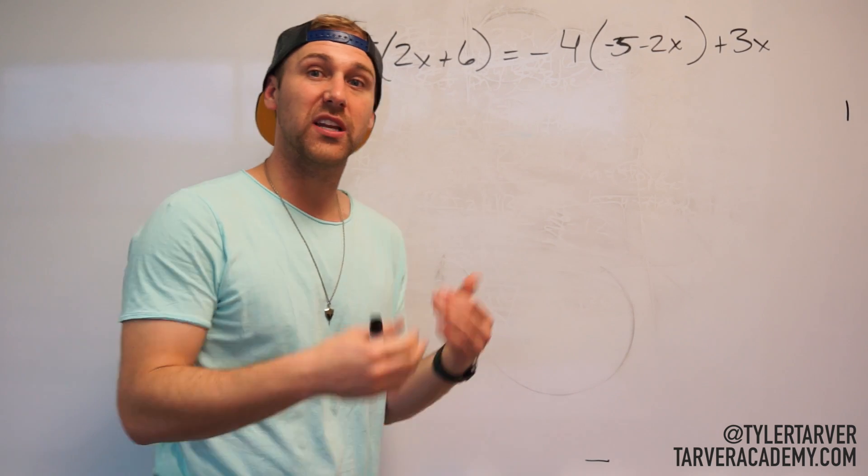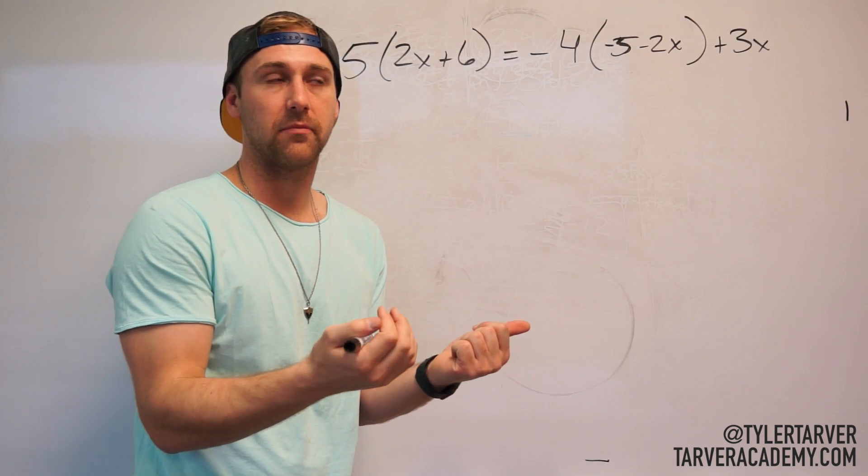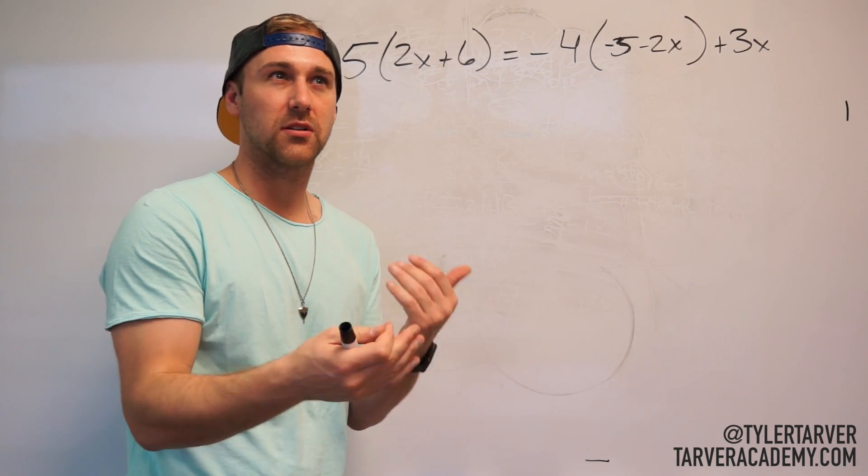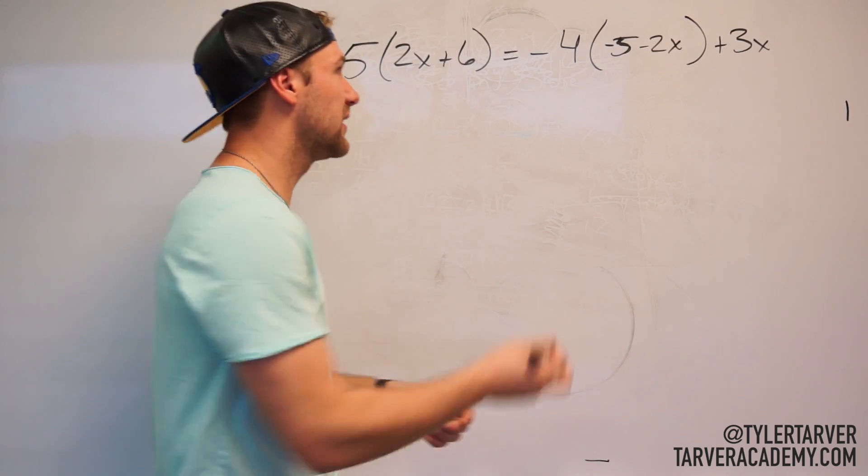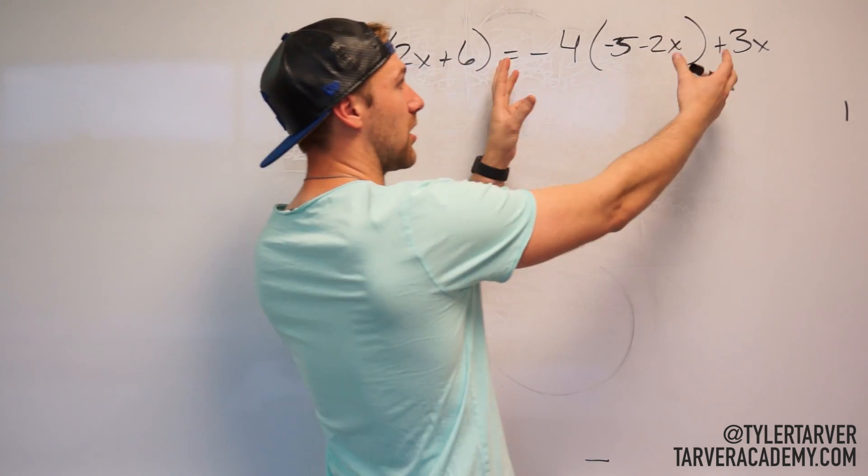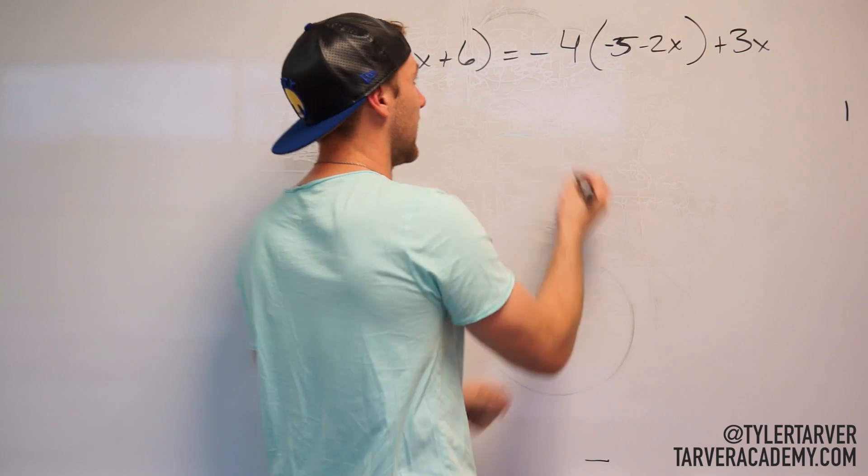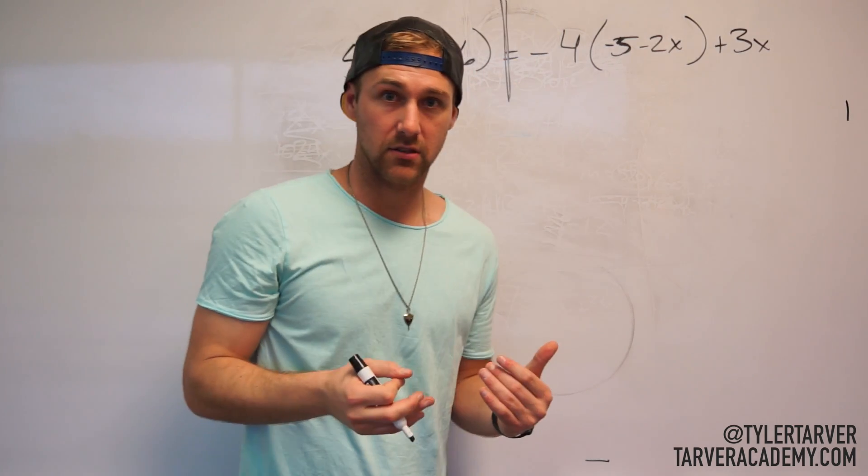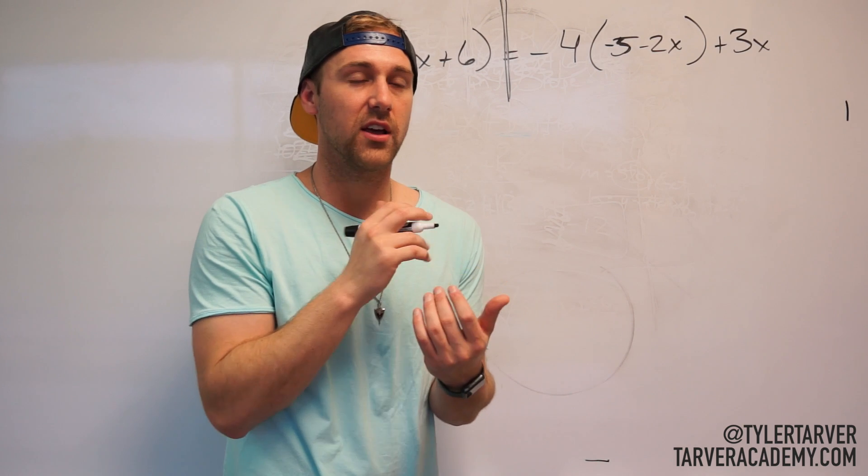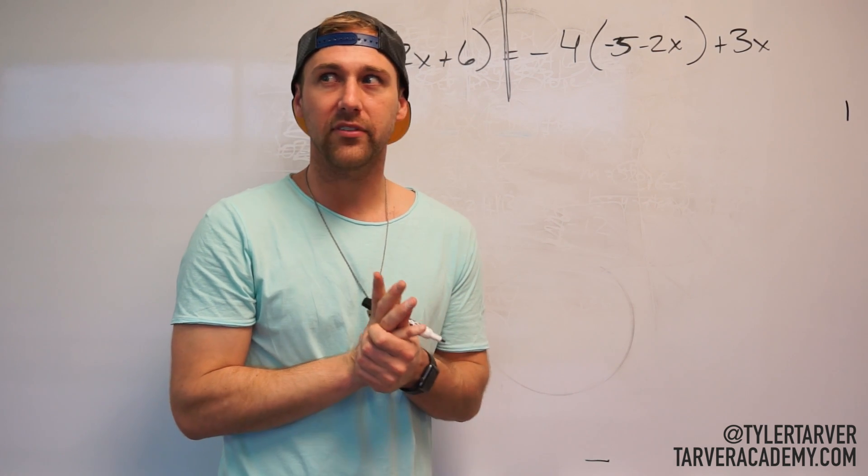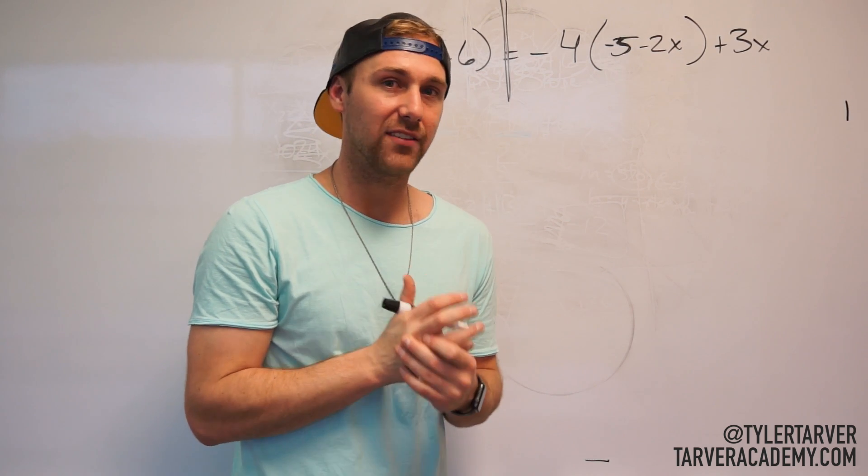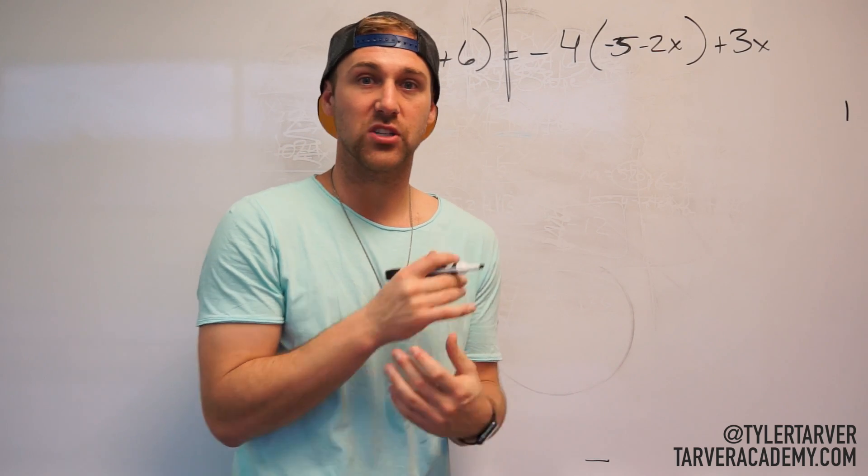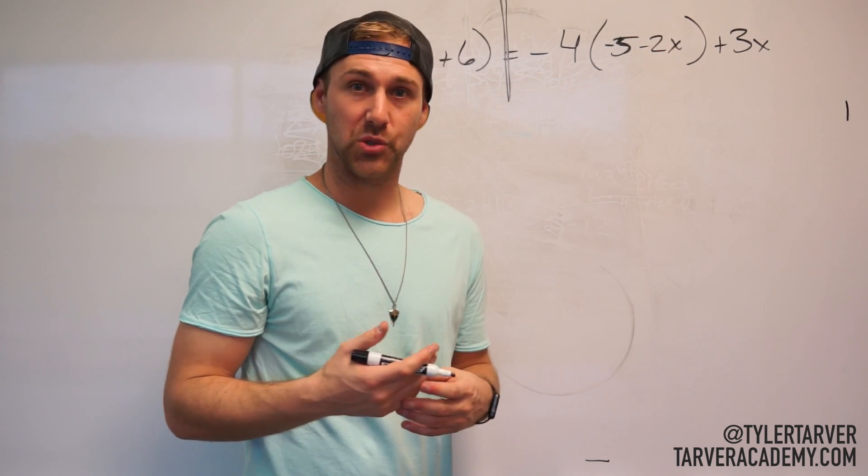The first thing we need to do is we need to simplify. We need to simplify this side, then combine like terms, simplify this side, then combine like terms. So I'm doing nothing to cross the equal sign yet. Which means I don't want to do anything weird, anything where you're like, I think you have to do the opposite of that. You're not doing any of that yet. You are just going to be solving like a regular math problem. 2 plus 2 is 4 kind of stuff.